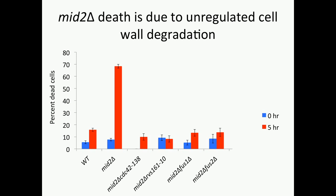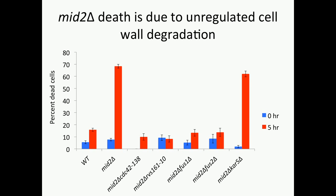We first asked: if we use a mating-specific allele of CDC42 or RVS161, or delete Fus1 or Fus2, can we suppress the mid2 pheromone-induced death? Out to five hours, we can actually suppress this death — we don't see the same level of death as in a mid2 deletion alone. And this is specific to cell wall degradation proteins; if we delete KAR5, a protein that has a nuclear fusion defect, we don't suppress this death.